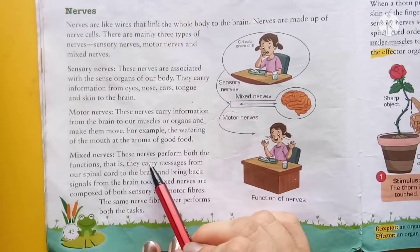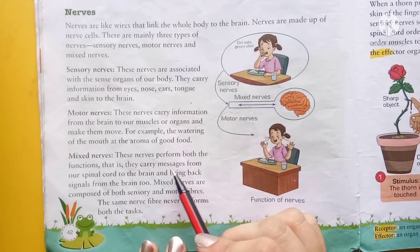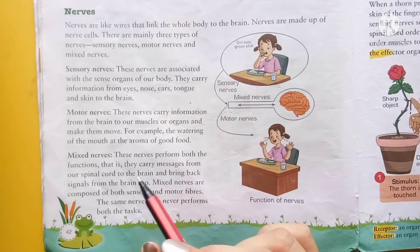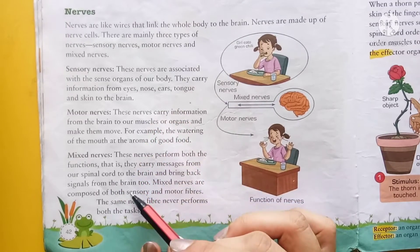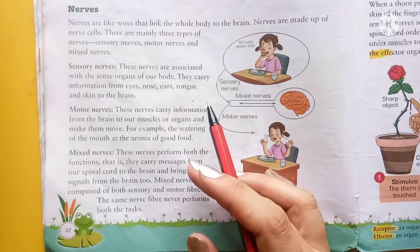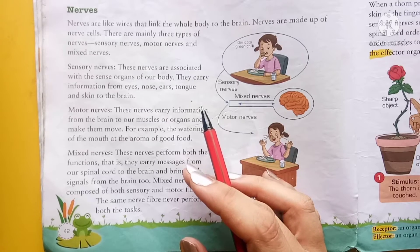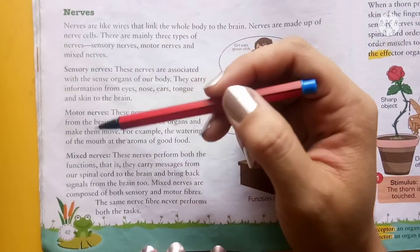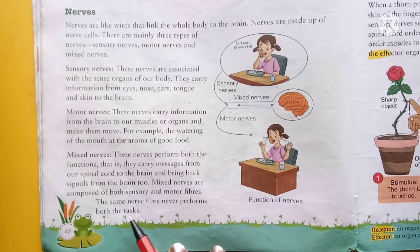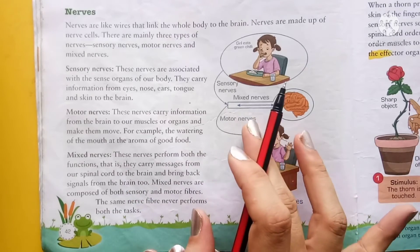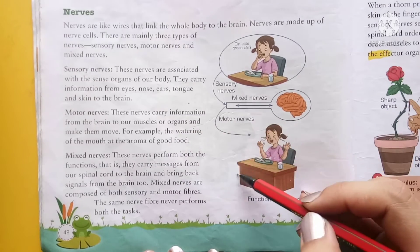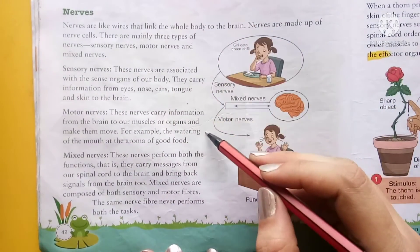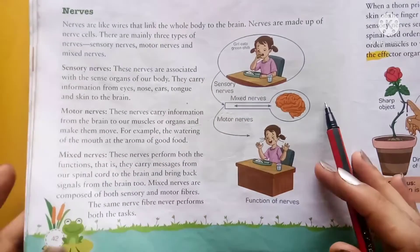Mixed nerves perform both functions — they carry messages from our spinal cord to the brain and bring back signals from the brain too. Mixed nerves कौन से होती है? यह signals को brain तक पहुंचाती भी है और brain से वापिस answer भी मिल जाता है. Mixed nerves are composed of both sensory and motor fibers. The same nerve performs both tasks. जो mix nerve है वो दोनों ही काम अपने आप करती है.